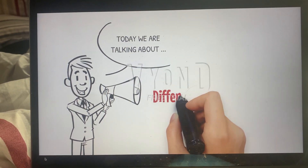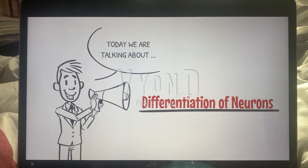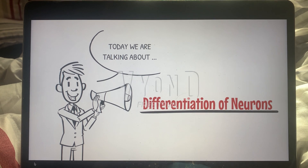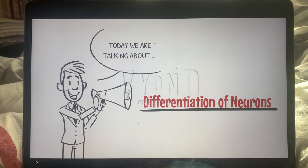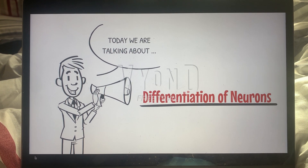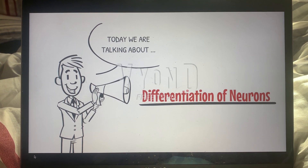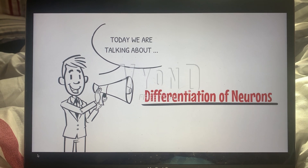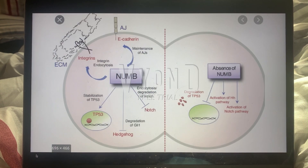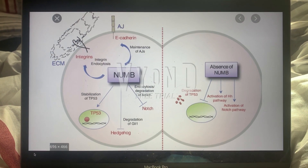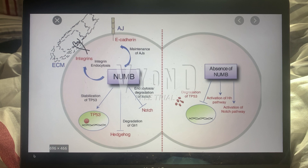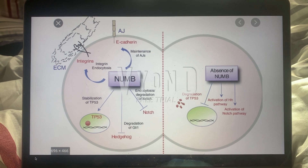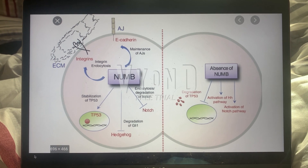Hello again, and in this final video I'm going to be talking about neuronal cell differentiation and how neuron cells come to be from their precursors. To start off, we have something called an SOP, which is a sensory organ precursor.